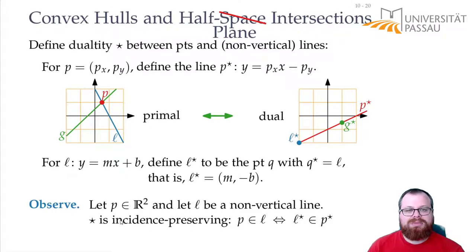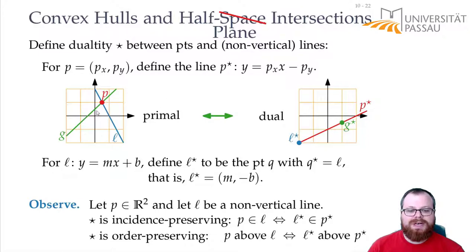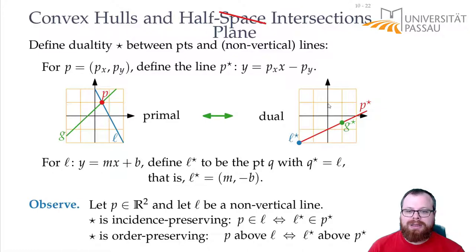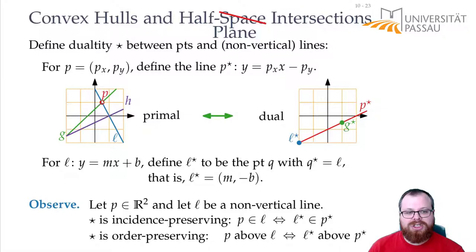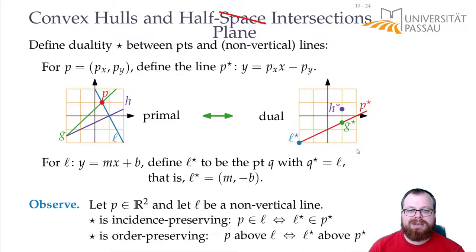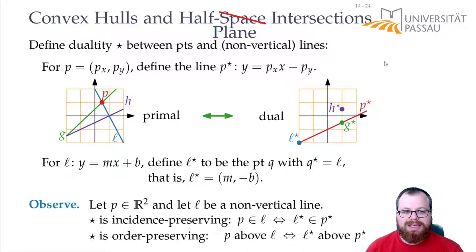Even stronger, it doesn't only preserve incidence but also preserves order. If I have a point that lies above some line, then in the dual, the dual point also lies above the dual line. For example, if I have a line H and P lies above it, then in the dual this corresponds to a point that lies above P-star. So this is a nice property that this duality preserves.